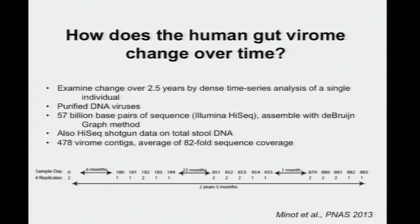One thing we wanted to investigate was how does the human gut virome change over time — and in part, this is investigating why humans are so different from each other. We studied one human individual for two and a half years by a dense time series analysis of stool samples. Sam studied a number of time points twice — taking the same stool sample and doing two separate purifications of viruses, then sequencing and analyzing. So we have an internal measure of within-sample variation, and we can compare that to between-time-point variation. We purified viruses and generated 57 billion bases of sequence from HiSeq, assembled with a de Bruijn graph method.